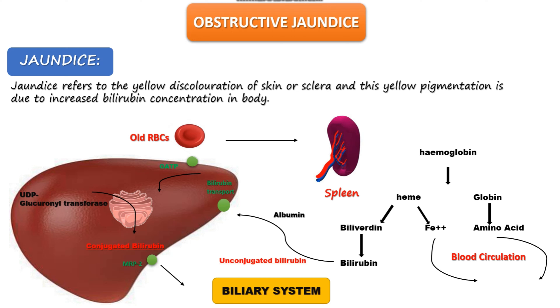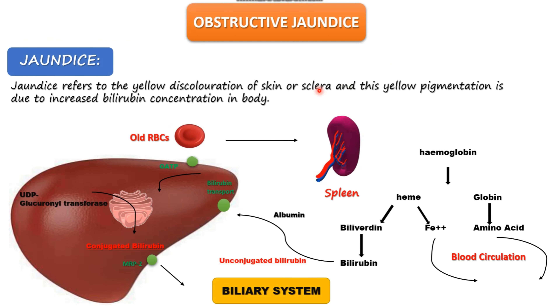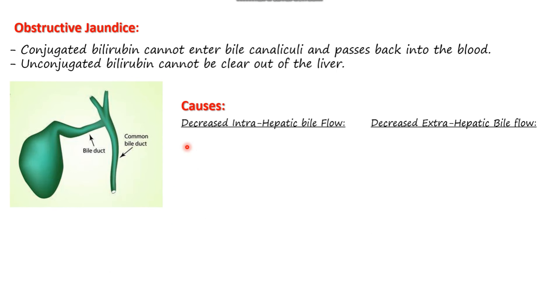In the biliary system, we have different components: conjugated bilirubin, bile salts, phospholipids, enzymes, and xenobiotics. In obstructive jaundice, conjugated bilirubin cannot enter the bile canaliculi and passes back into the blood, and unconjugated bilirubin cannot be cleared out of the liver. The conjugated bilirubin produced within the hepatocyte has to exit via MRP2 to reach the biliary system, but in obstructive jaundice this pathway is blocked. As a result, conjugated bilirubin cannot get out, and unconjugated bilirubin cannot enter to be converted.